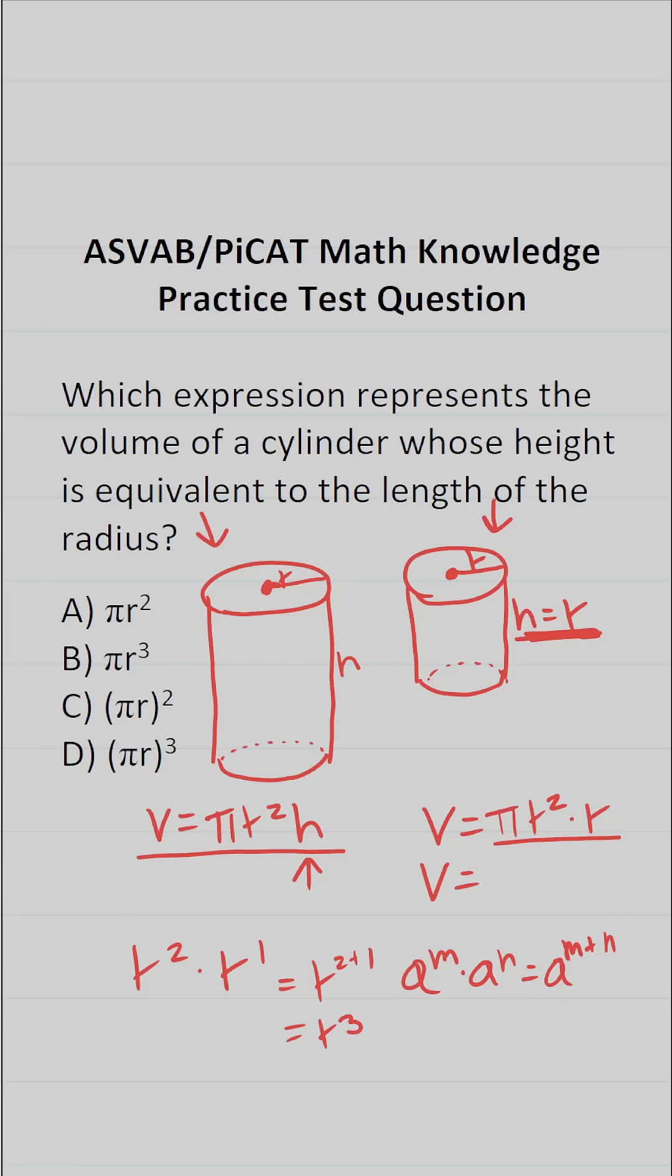So the volume of this cylinder, where the height is equal to the radius, is going to be pi R to the third. So this one is clearly B.